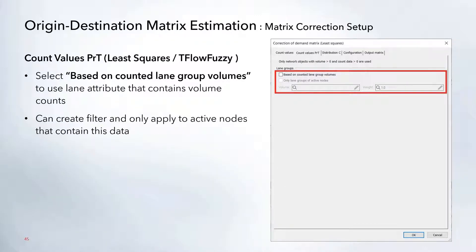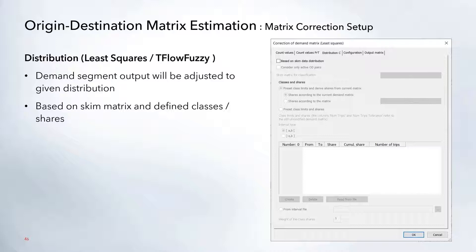Moving on to the next tab — count values PRT — this is the same for both options. It allows you to add in volumes if you have them on individual lanes. You can also apply a filter: checking the active nodes option lets you filter for only nodes that contain lane-based data, so the correction is performed only at those specific locations. The distribution tab lets you distribute the demand segment data based on a skim matrix, where you can choose the skim matrix and set up class and share information.